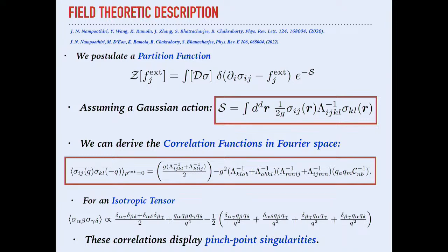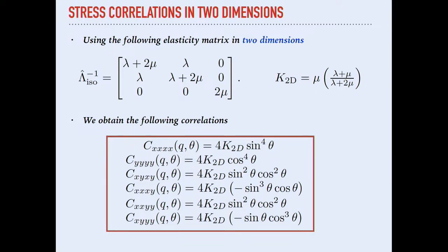You can compute from this Gaussian theory what the correlations look like. In two dimensions, the lambda tensor — the mixing tensor of the Gaussian action for the stress tensor — can be written in diagonal form. If you posit such a diagonal form, you can derive the correlation functions in Fourier space, which depend only on the angle. This is telling me there are anisotropic correlations at really large length scales. The correlation depends on how you approach Q equal to zero — the large-length-scale limit — giving different limits in different directions.